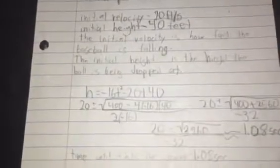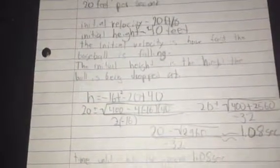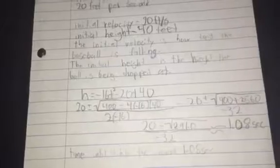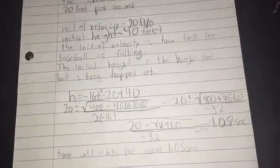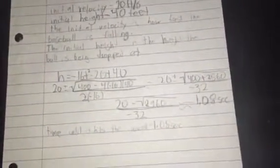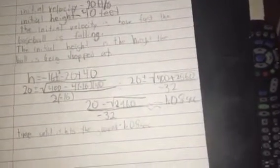We took the equation which is h equals negative 16t squared minus 20t plus 40. Since time can't be negative, we didn't have to do the plus of that. So the time until the baseball hits the ground will be 1.08 seconds. And that concludes our quadratic formula project.